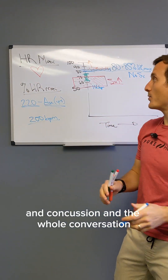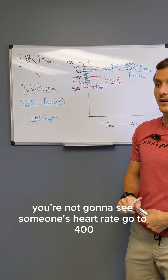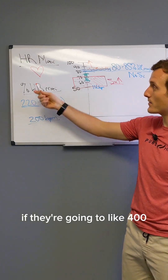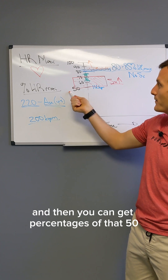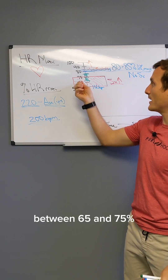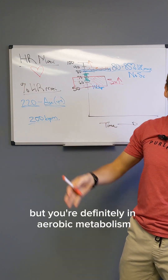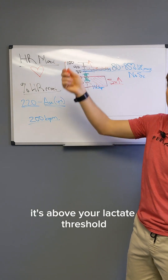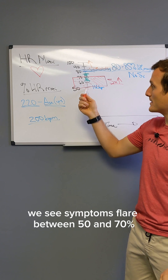So to summarize: heart rate max is just the maximum times your heart will beat — for most people it's 220 minus their age — and you take percentages from there: 50, 60, 70, 80, 90, 100%. Aerobic training is typically prescribed between 65 and 75%, now often called zone two training, because you're below the lactate threshold but firmly in aerobic metabolism. Anaerobic metabolism is above the lactate threshold, usually above 85% of heart rate max, especially if you're physically conditioned.